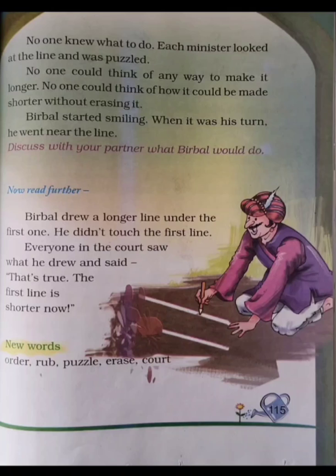Discuss with your partner what Birbal would do. Now read further. Birbal drew a longer line under the first one. He didn't touch the first line. Everyone in the court saw what he drew and said: That's true. The first line is shorter now.